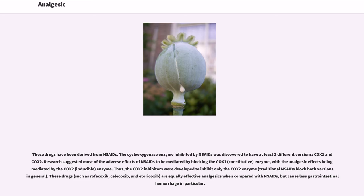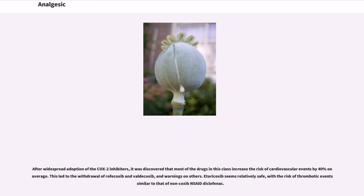These drugs, such as rofecoxib, celecoxib, and etoricoxib, are equally effective analgesics when compared with NSAIDs, but cause less gastrointestinal hemorrhage in particular. After widespread adoption of the COX-2 inhibitors, it was discovered that most of the drugs in this class increased the risk of cardiovascular events by 40% on average. This led to the withdrawal of rofecoxib and valdecoxib, and warnings on others. Etoricoxib seems relatively safe, with a risk of thrombotic events similar to that of non-coxib diclofenac.